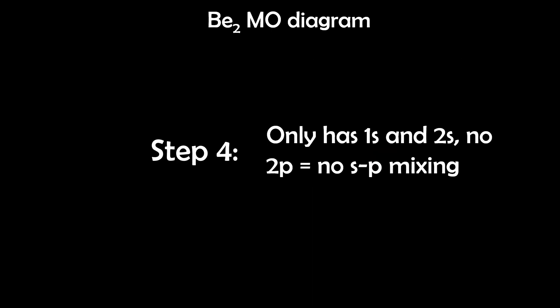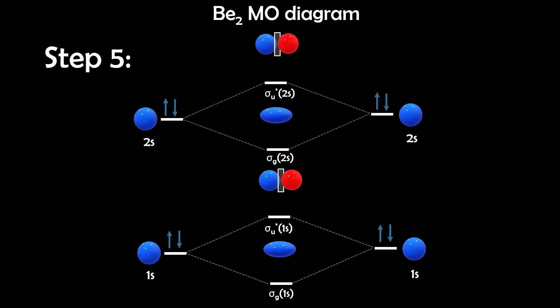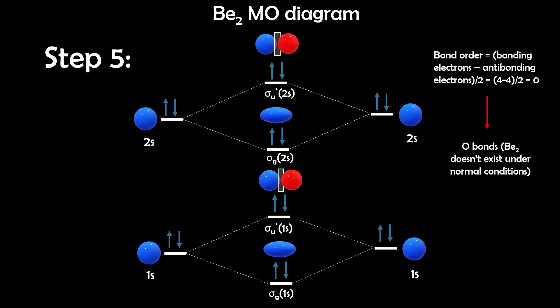Step 4: Does it have sp mixing? No, because there are no p orbitals here. Step 5: Build the diagram. We pair the 1s orbitals to make σg1s and σu*1s, then pair the 2s orbitals to make σg2s and σu*2s. Be₂ has 8 valence electrons in total, so we fill all 4 molecular orbitals. Every electron is paired, which means it's diamagnetic, but the bond order is also 0, so there's no stable bond — which is why Be₂ doesn't actually exist under normal conditions.